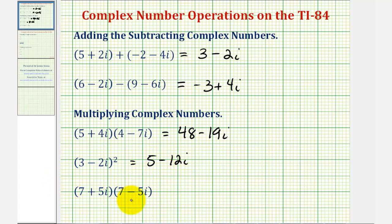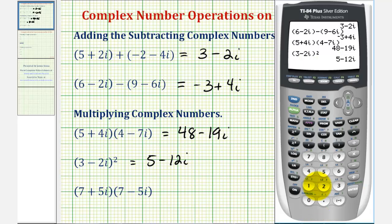Now looking at our last example of a product, notice how these are complex conjugates, so this product will be a real number. Let's go ahead and verify that. We have seven plus five i times seven minus five i. And the product is equal to seventy-four.